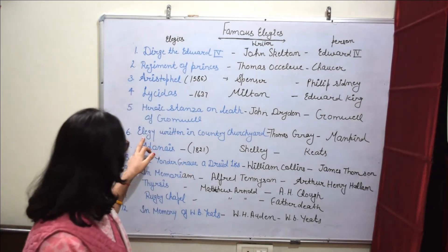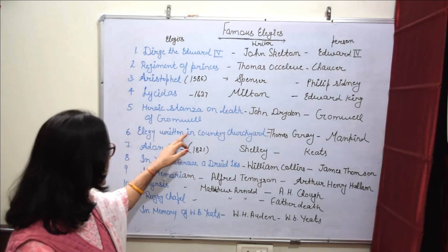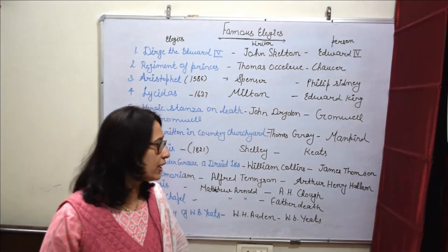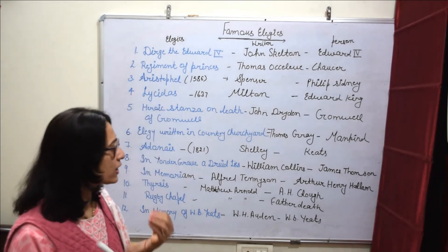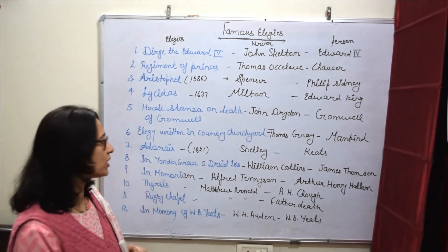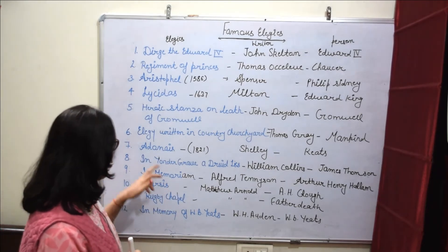इसके बाद आता है Elegy Written in a Country Churchyard, जो Thomas Gray के द्वारा लिखी गई है। यह Mankind in General के ऊपर लिखी गई है।